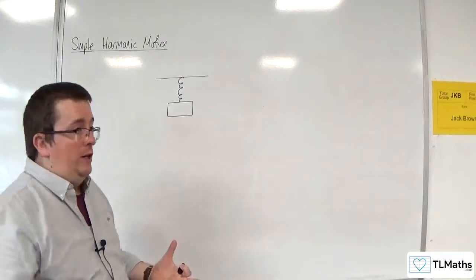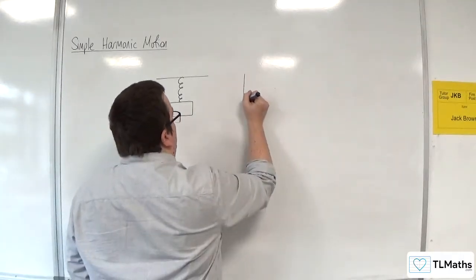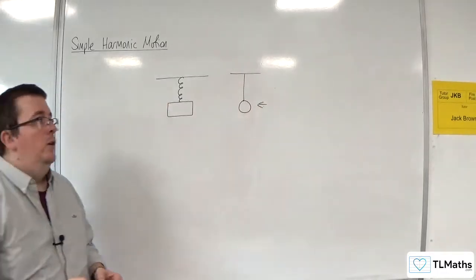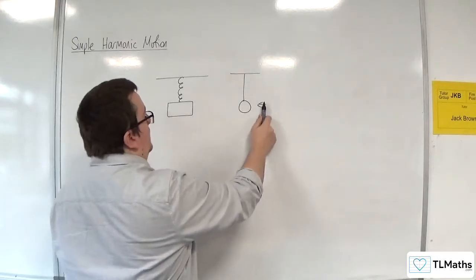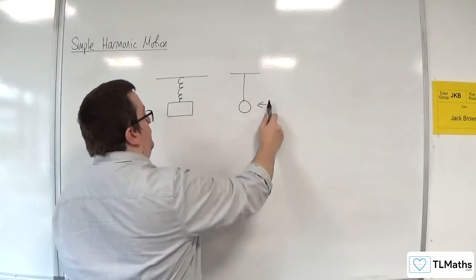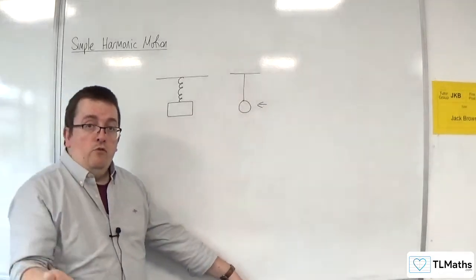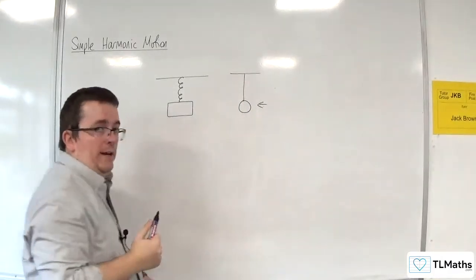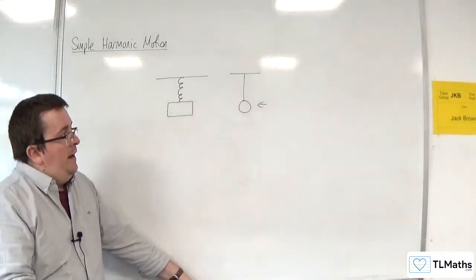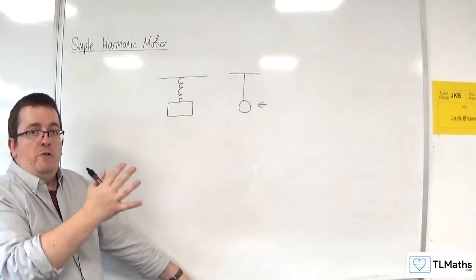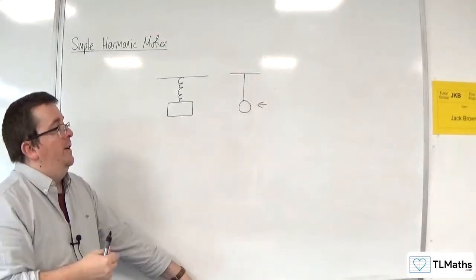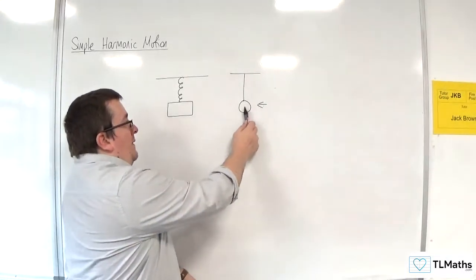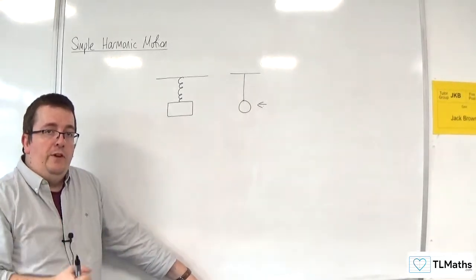Likewise, you could look at a pendulum. If you had a pendulum that you moved to the side, what would you expect to happen? You would expect it to start swinging backwards and forwards. And realistically you would expect that to die down and go back to its original position eventually. In an ideal world it might keep on going forever, but you know that's not going to happen. We could look at a simple model that deals with that.